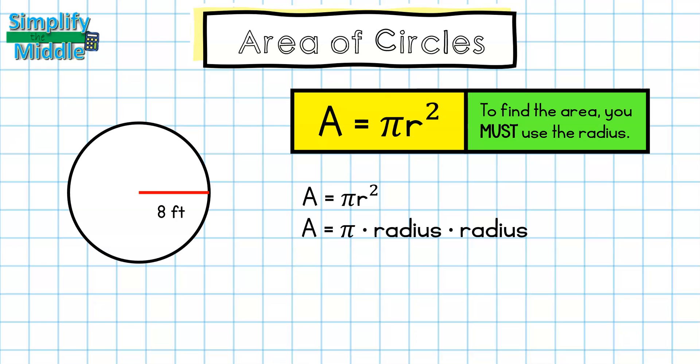So our next step is to substitute. So I have again 3.14 as my approximation for pi. So I have area is about 3.14 times 8 times 8. And then finally when I multiply, I get area is approximately 200.96 feet squared. And again, we always want to put the squared on my units.